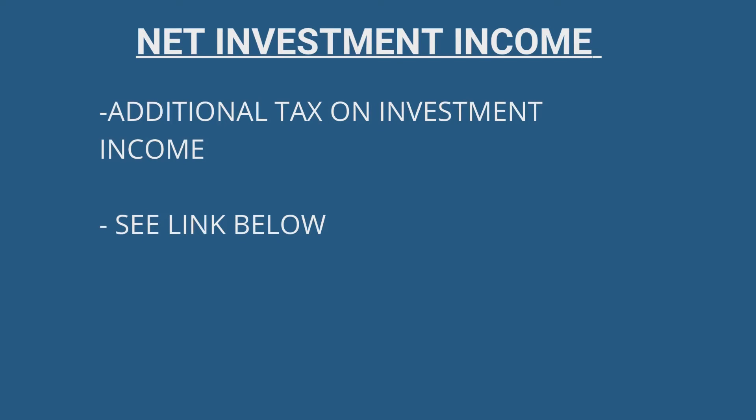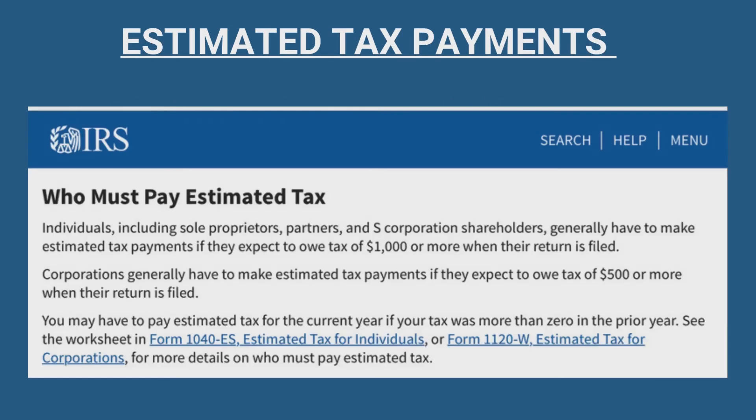Second, taxpayers who meet a certain income threshold are subject to an additional 3.8% net investment income tax on top of ordinary capital gains. For more information, see the video linked below. Finally, investment income is subject to estimated tax provisions — if you earn significant investment income in a taxable account, familiarize yourself with the estimated tax rules or make sure your tax preparer is in the know.